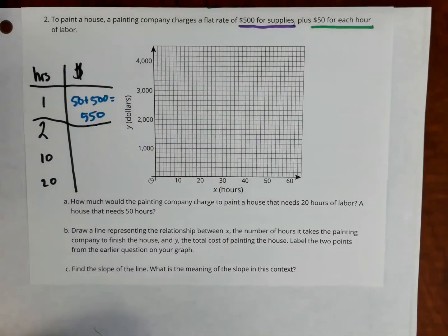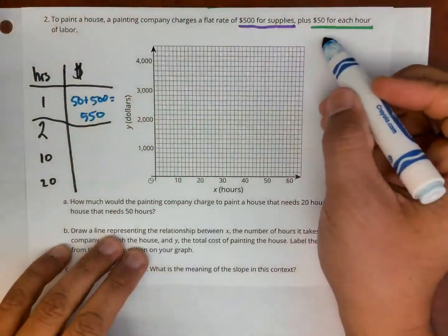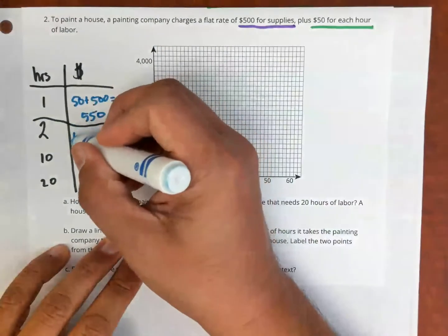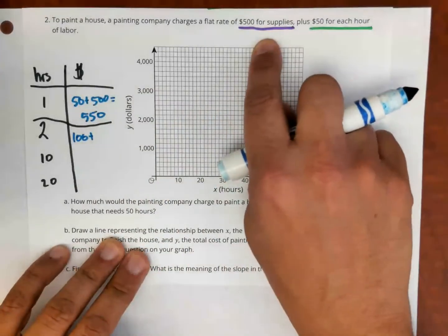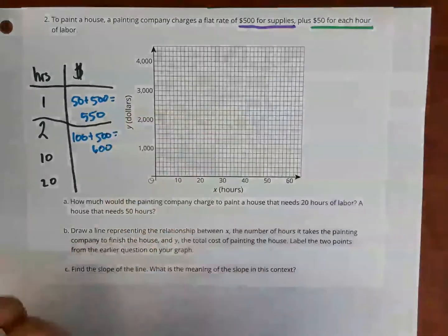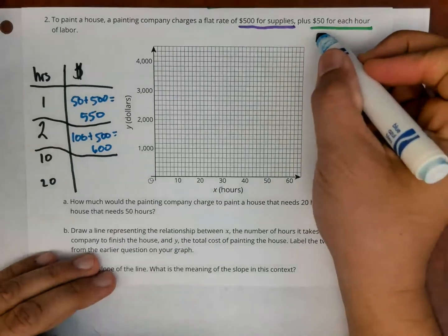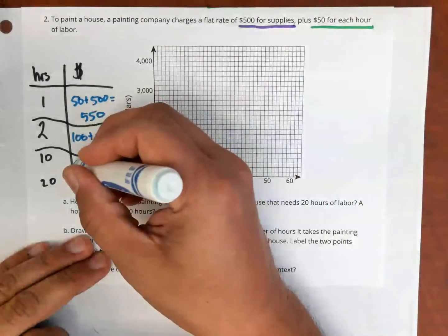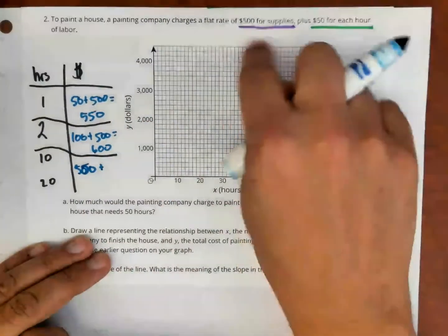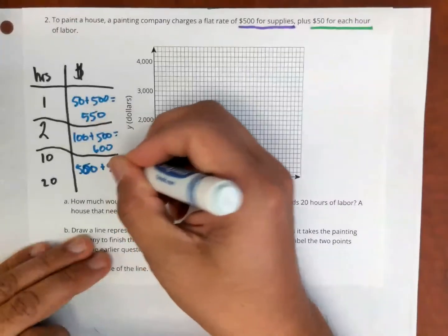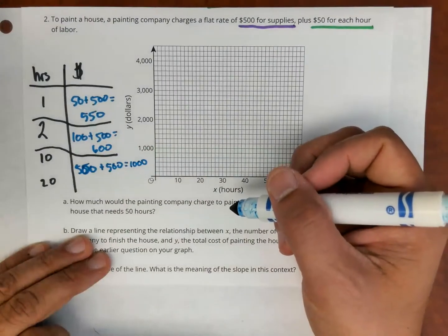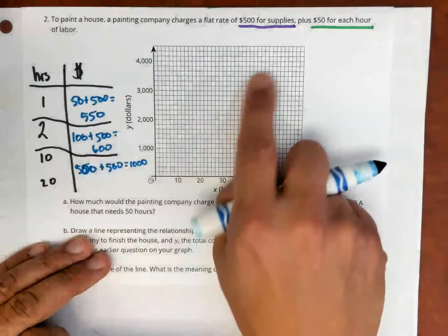Now I'm going to do two hours, which is going to be $100 for the hours, that's $50 plus $50, plus the supplies which are $500, which is $600. So for 10 hours, the company is going to charge $50 for each hour, that's $500 plus the supplies, $500. You should notice here that the supplies are always $500, no matter how many hours. This first $500 I got by doing 10 times 50.